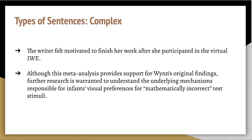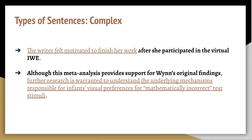The third type of sentence is the complex sentence — sentences with one independent clause and at least one dependent clause. This means that one clause can stand alone as its own complete thought, while at least one other clause is dependent and cannot stand by itself. Pause the video and locate the independent clauses in these two examples. I have color-coded the independent clauses in gold underlined text and bolded the dependent clauses in black. In both examples, the dependent clauses offer clarifying information about the independent clauses with which they are joined.